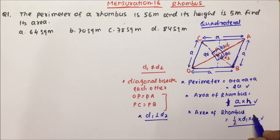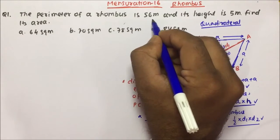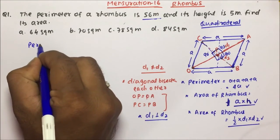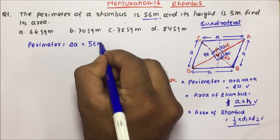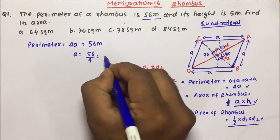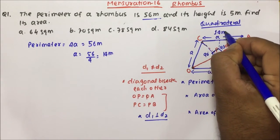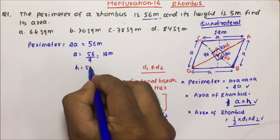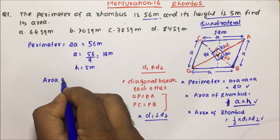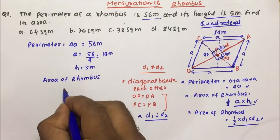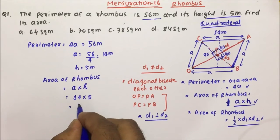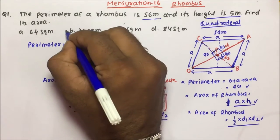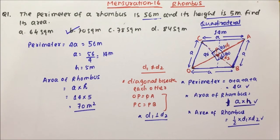Now the first question: the perimeter of a rhombus is 56 meters. Perimeter of rhombus equals 4 × side, and that is given as 56 meters. So a equals 56 divided by 4, which is 14 meters. Height is given as 5 meters. Area of rhombus equals a × h, so 14 × 5 equals 70 meter square. So option B is the correct answer for question number one.